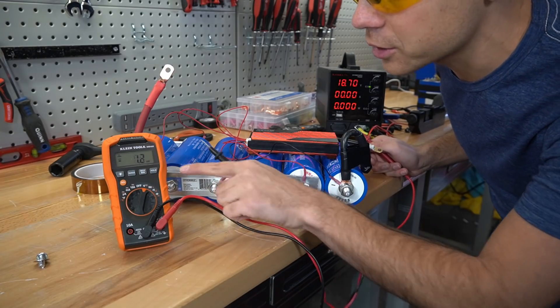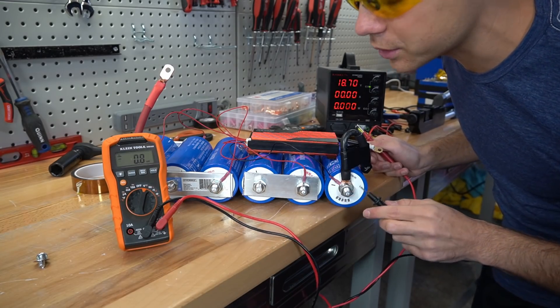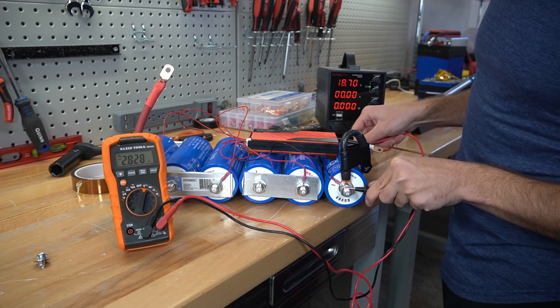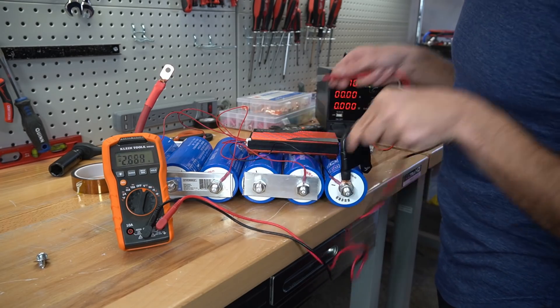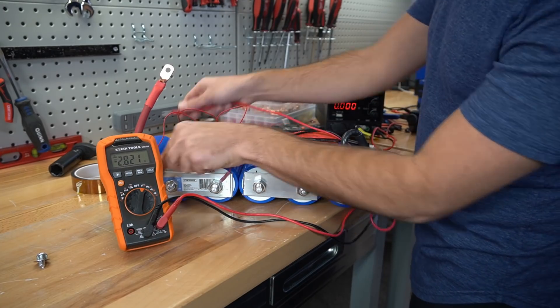To ensure our cells are balanced we're going to check the voltage of the individual cells one more time. 2.82, 2.83, 2.83, 2.83, 2.82, 2.82. So we're good to go.